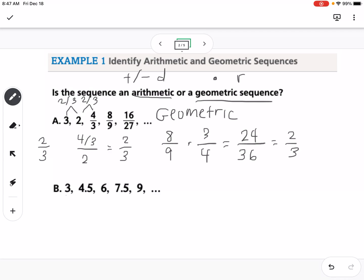If we go down to the second one, I can add 1.5 to get to 4.5, then I can add 1.5, then I can add 1.5. I can see this one's adding a common difference each time, so that means this one will be arithmetic.